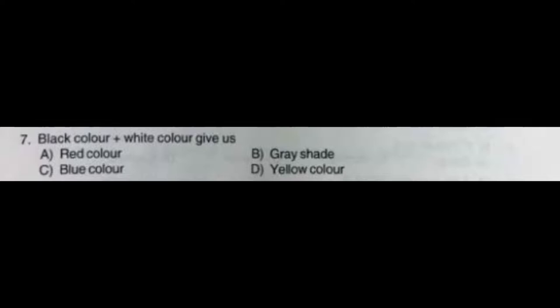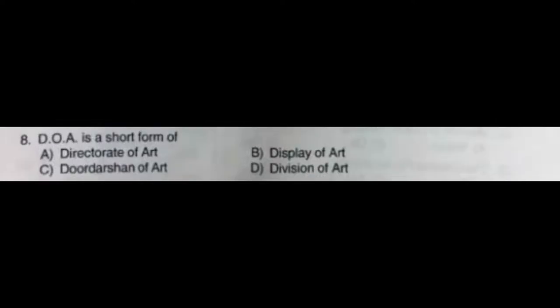Question number eight: DOA is a short form of — option A: Direct Rate of Art, option B: Display of Art, option C: Doordarshan of Art, option D: Division of Art. The correct answer is option A: Direct Rate of Art.